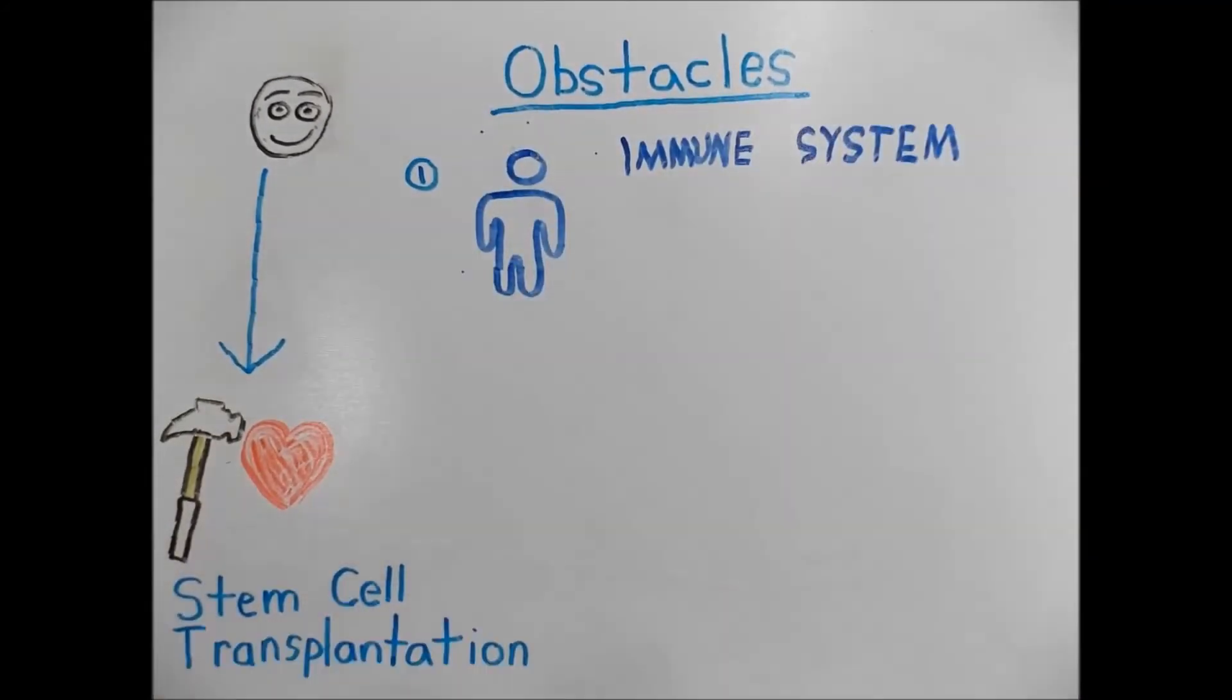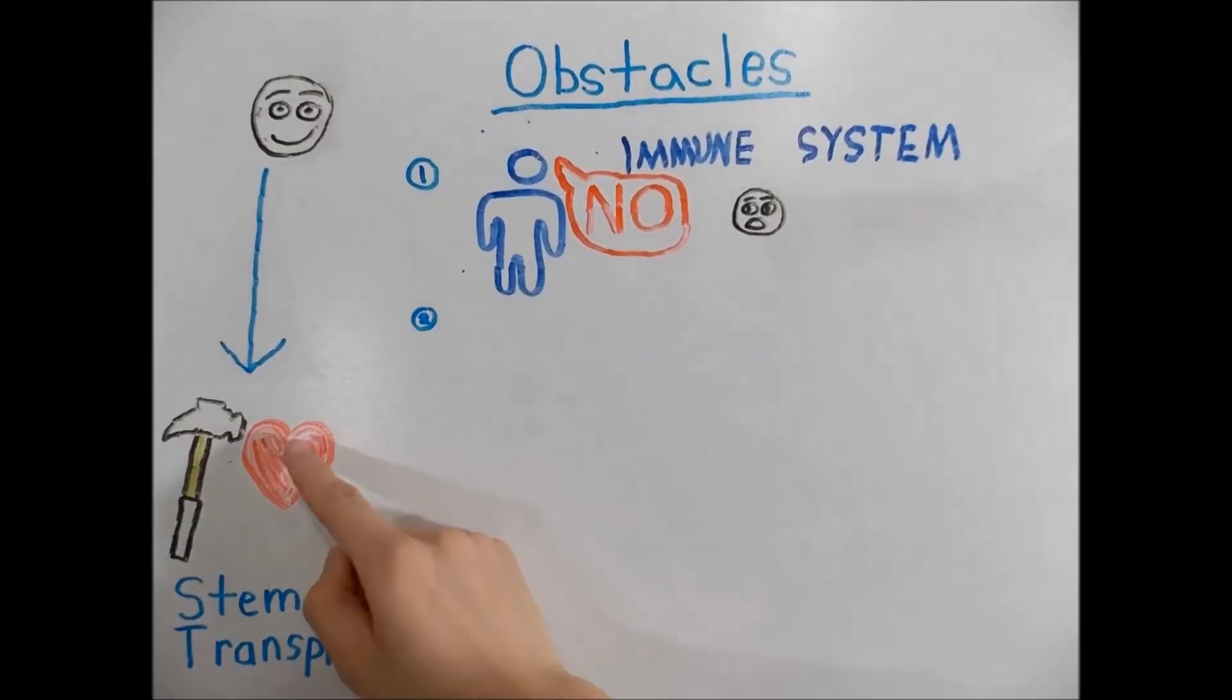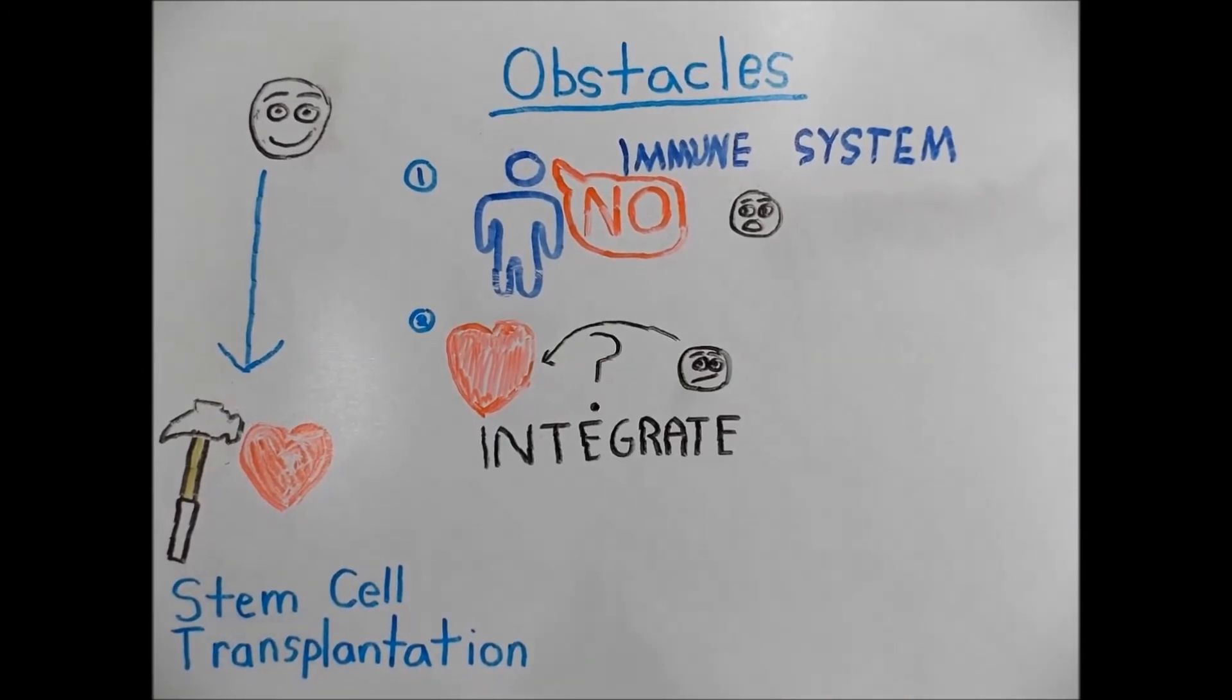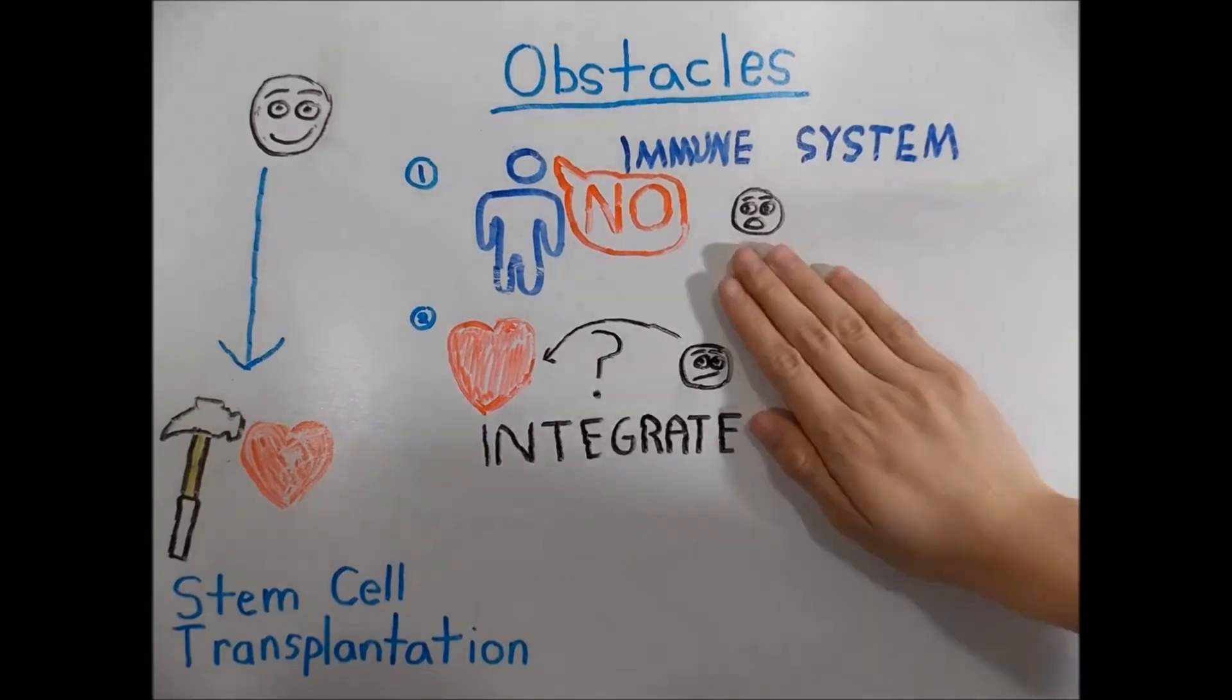Firstly, a patient's immune system might recognize these cells as foreign and reject them, and suppression drugs may hamper a patient's immune system. Or, researchers must find a way to integrate the cells into the surrounding tissues. For example, stem cells that have been cultured to be healthy heart cells may not pump blood properly once transplanted.